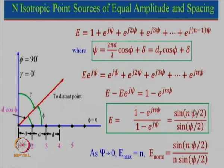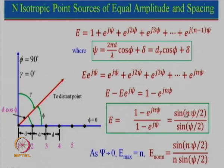The maximum value of this array factor occurs when ψ → 0. If you substitute ψ = 0 directly you get 0/0, which is indeterminate, so you apply L'Hôpital's rule: when x is small, sin(x) ≈ x. So sin(nψ/2) ≈ nψ/2 and sin(ψ/2) ≈ ψ/2, giving a maximum value of n. So E_normalized = sin(nψ/2) / [n × sin(ψ/2)]. In the next lecture we will talk about more detail about this, and remember all the pattern calculations can be derived from just this one very simple equation.